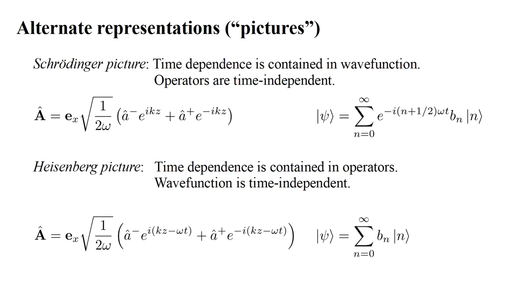In the Heisenberg picture, our wave function has no time dependence. It's identical to the Schrödinger wave function evaluated at time t equals zero. The time dependence now appears in the field operator, through the factor e to the i(kz - ω t), and its complex conjugate.